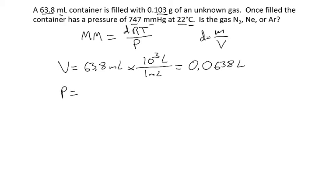For the pressure, I have 747 millimeters of mercury, and I know there's 760 millimeters of mercury in one atmosphere. And so my pressure comes out to be 0.983 atmospheres.